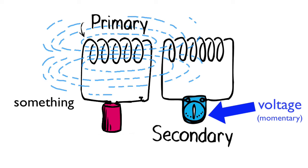After that first moment, the voltage in the secondary loop vanishes. Now stop passing the current through the first coil of wire, and the resulting magnetic field goes from something to nothing.